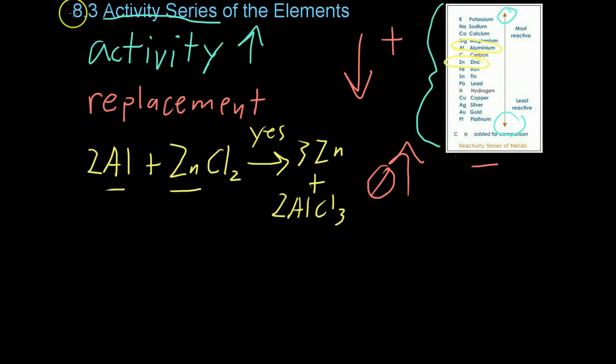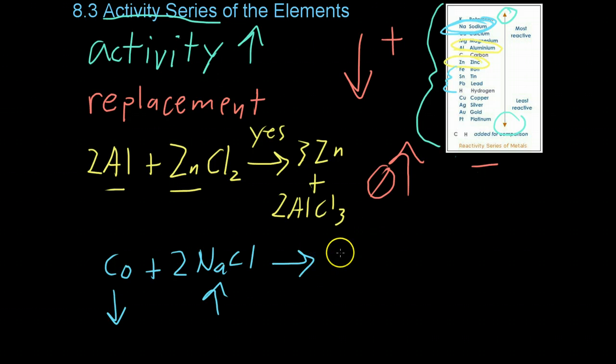Now, similarly, if you were to try a reaction, let's say you had cobalt on its own plus sodium chloride, that is, salt. Now, you'll notice sodium way up here by the top, right? And cobalt isn't listed here, but it's down here by iron, tin, and lead. So, because cobalt is lower down than the sodium, which is high up, and therefore highly reactive, the cobalt will not be able to take the sodium's place, so no reaction will happen.